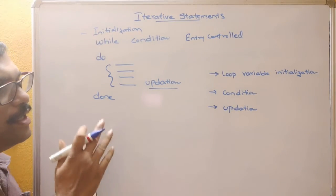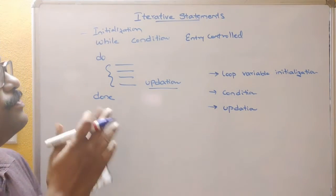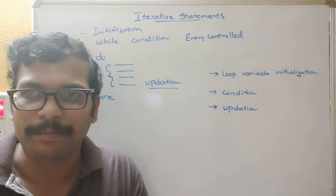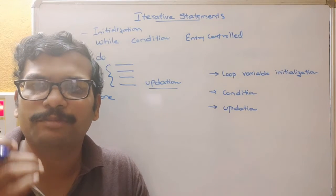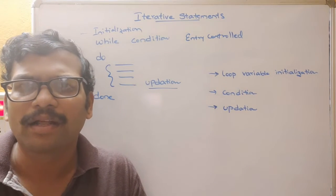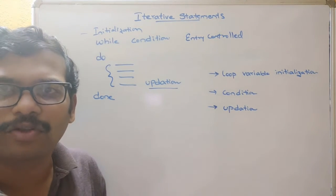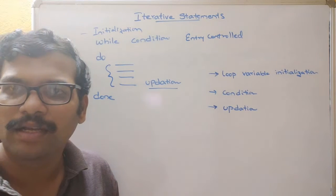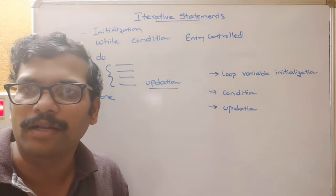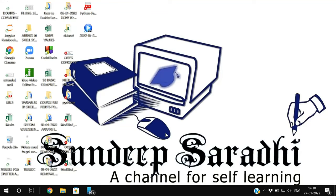This is the syntax for while loop, and previously we have seen the syntax for the for loop. Now I will show you the execution of while and for loop in the terminal. We will take a small example and demonstrate it in the Ubuntu terminal.